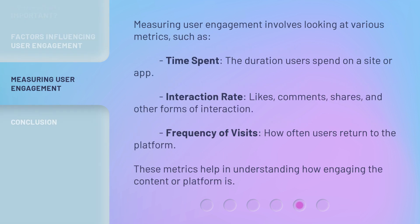Measuring user engagement involves looking at various metrics, such as time spent — the duration users spend on a site or app; interaction rate — likes, comments, shares, and other forms of interaction; and frequency of visits — how often users return to the platform. These metrics help in understanding how engaging the content or platform is.